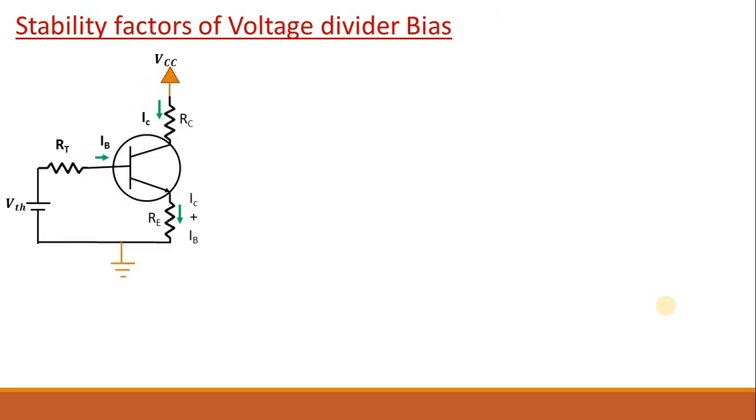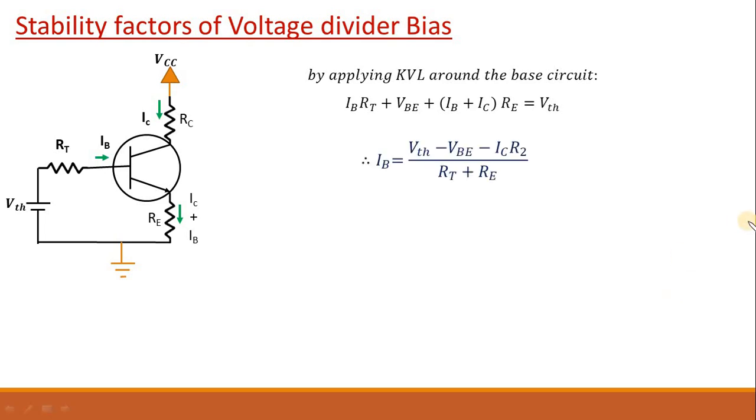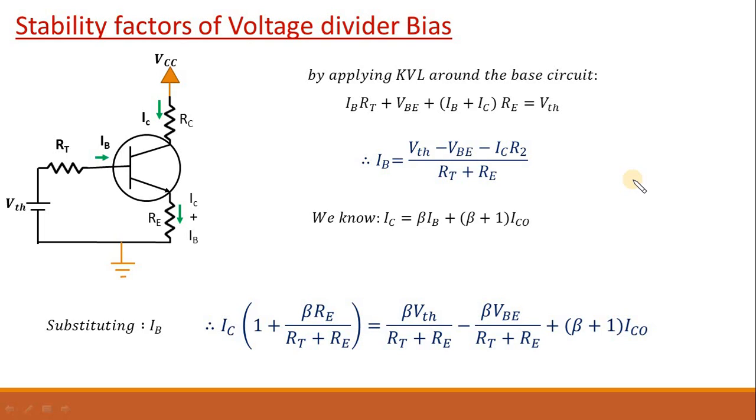Once we have this simplified circuit we can easily calculate IB just by applying KVL around the base circuit. So voltage drop across Rt plus voltage drop across base emitter junction plus voltage drop across Re will be equals to Vth. From this relation you can calculate Ib which will look like this. Now once you know Ib you can calculate Ic. We know there is a direct relation between Ic and Ib. Ic is equals to βIb plus β plus 1 Ico. So substitute the Ib here and you will finally get this relation. We will use this relation to evaluate the stability factors.